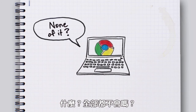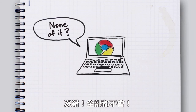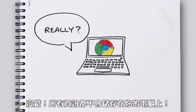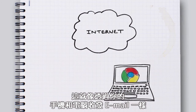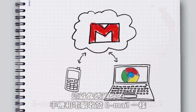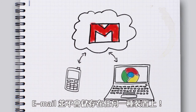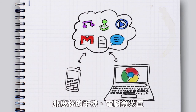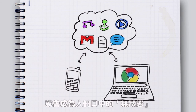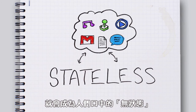None of it is stored on your computer. Where is it? It's on the internet — like when you access your emails from your computer and your phone. The email isn't stored on either device. So if everything's stored on the internet, then your phone, your computer, all of these devices are what people call stateless.